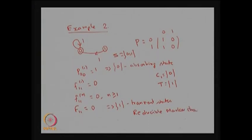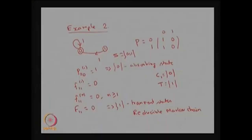The previous example was an irreducible Markov chain, where two elements formed only one closed communicating class. Whereas here, we have one closed communicating class with one element and one transient state — therefore it is a reducible Markov chain. There can be more than one transient state. Now I am moving into the third example to explain some more concepts.